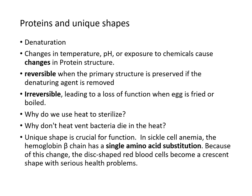A protein's shape can be altered, sometimes reversibly and sometimes irreversibly. If the structure is altered, we call that denaturation. Changes in temperature, pH, or exposure to chemicals can change protein structure. It is reversible if the primary structure is preserved and the denaturing reagent is removed. If irreversible, there is a loss of function — like when an egg is fried and turns white, that's a loss of function of egg albumin proteins.